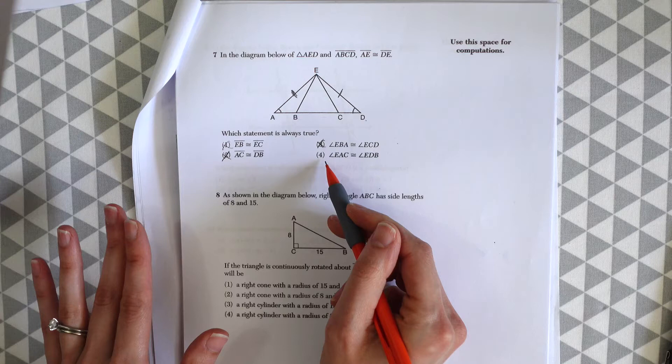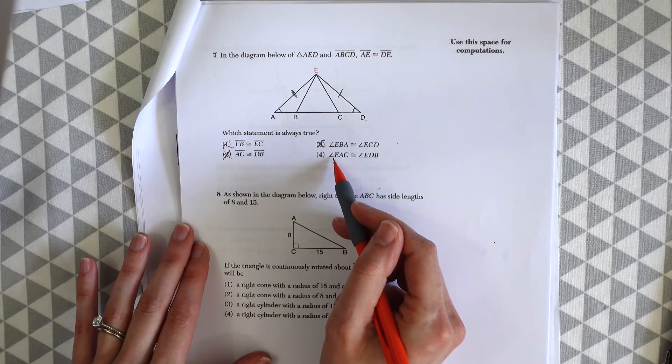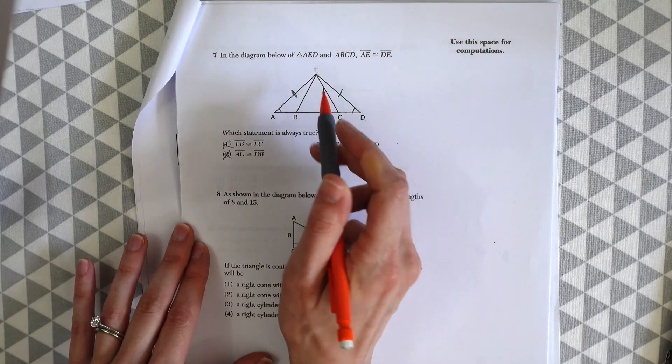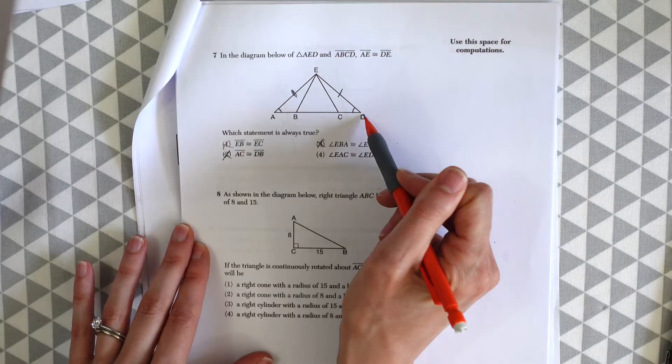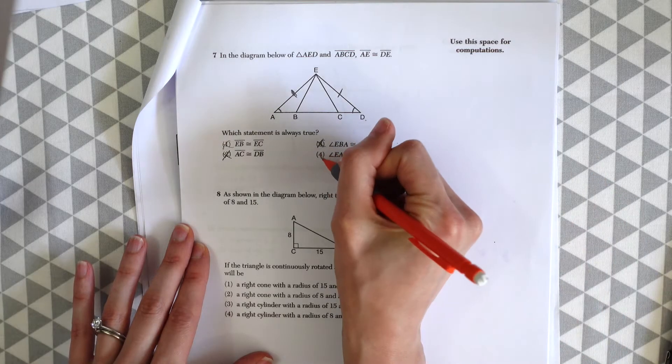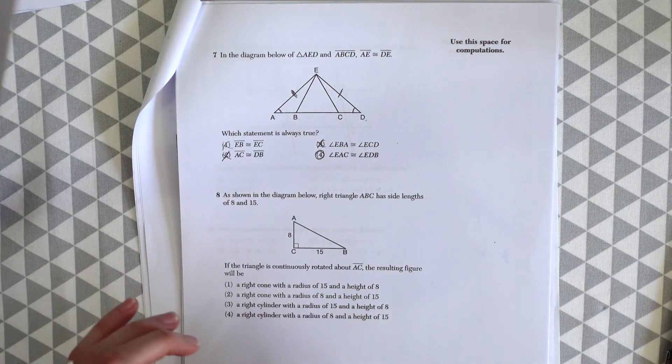So by process of elimination it must be choice four, but let's look at why angle EAC, so we get that angle A in there, is congruent to angle EDB. So yes, choice four gives us the answer we're looking for.